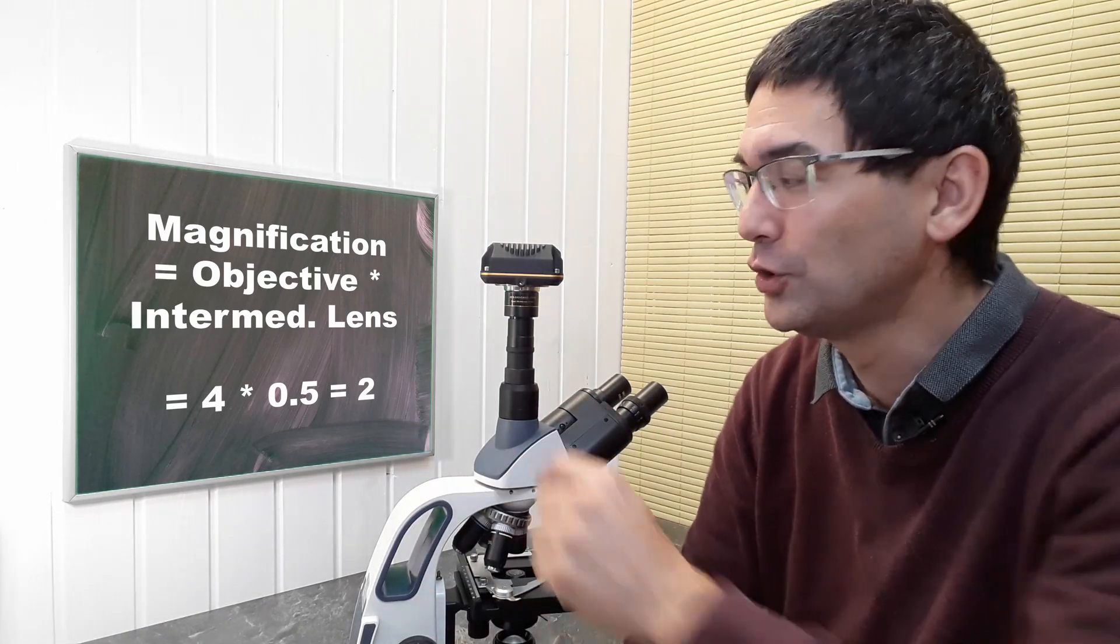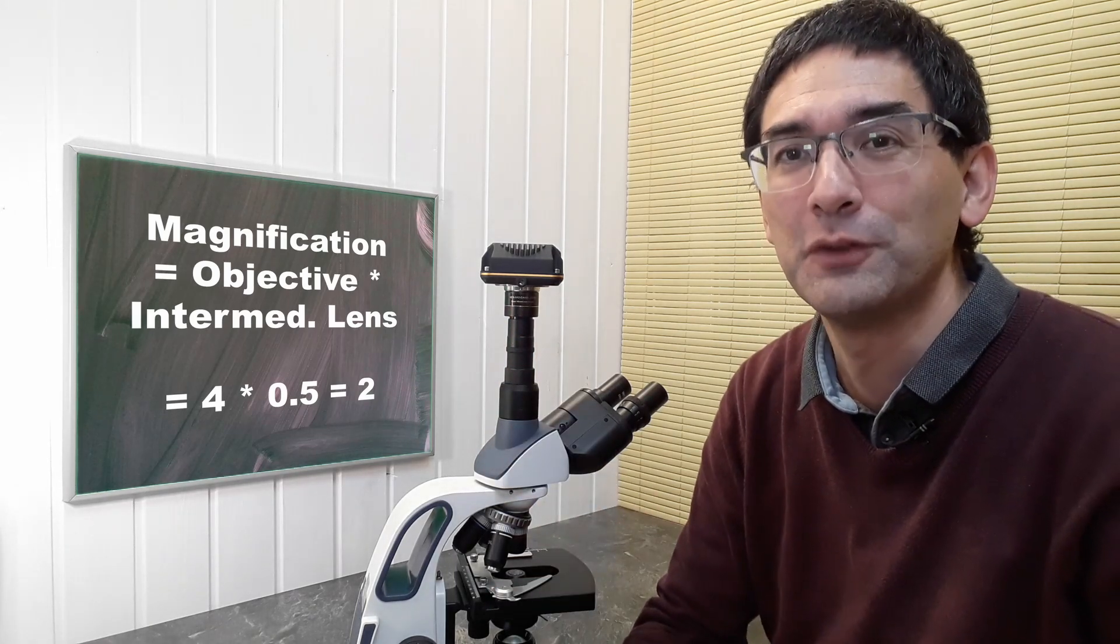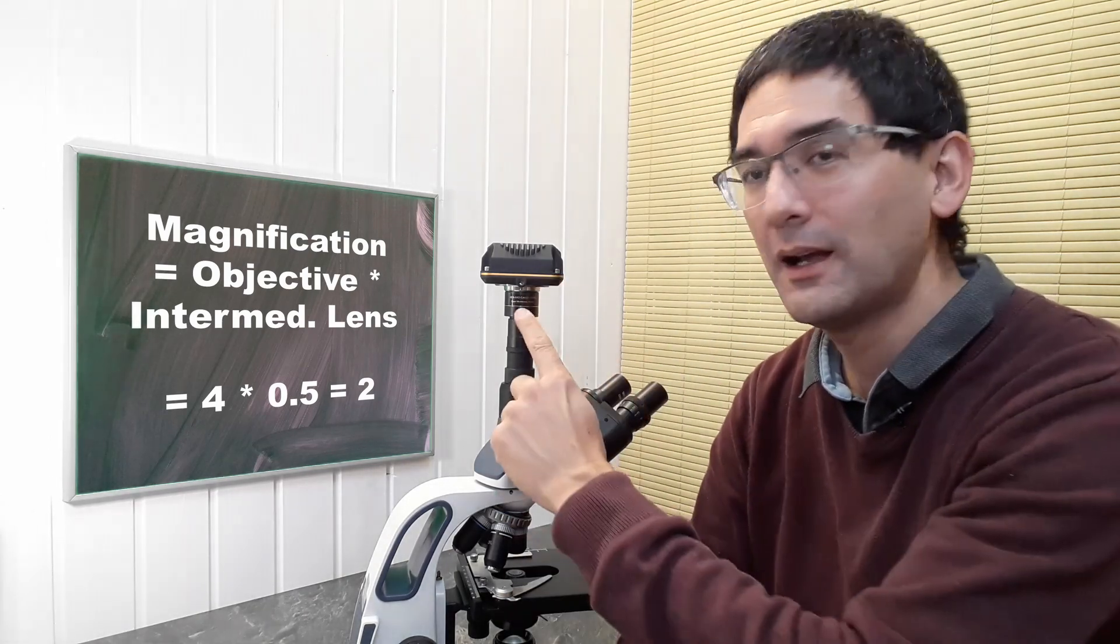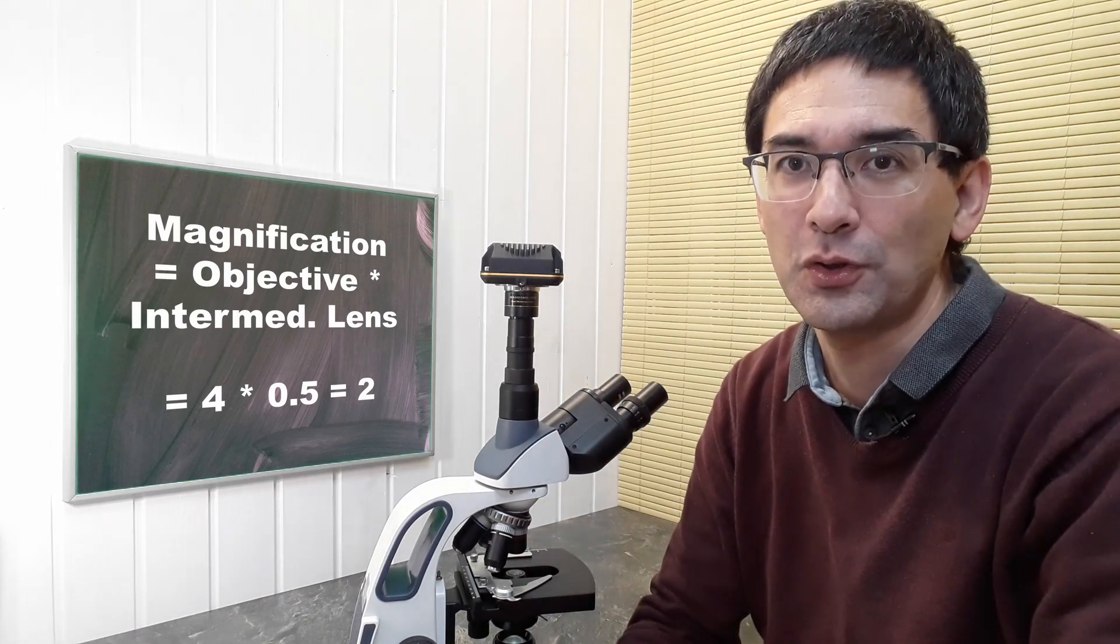In summary, you multiply the objective times the intermediate optics to get the total optical magnification of the microscope.